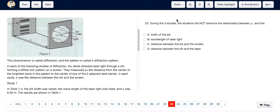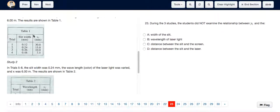Question 23 is basically asking us which of these factors was not at all involved in the experiment. So the width of the slit was definitely measured in one of the experiments, study 1 itself.